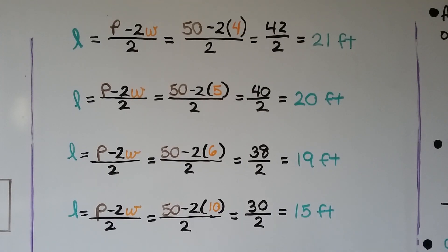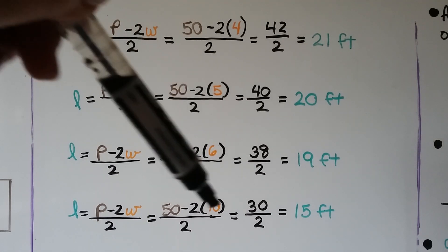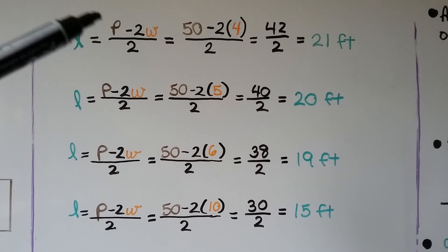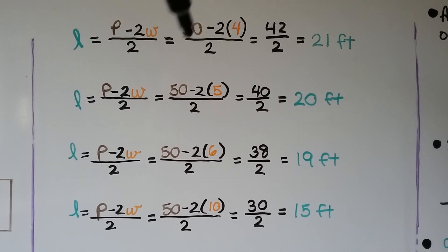So we've set up our formula for the width to be 4, 5, 6, or 10. She has 50 feet of fencing, so p is going to be 50 minus 2 times 4, which gives us 42. We divide that by 2, and we get 21 feet.